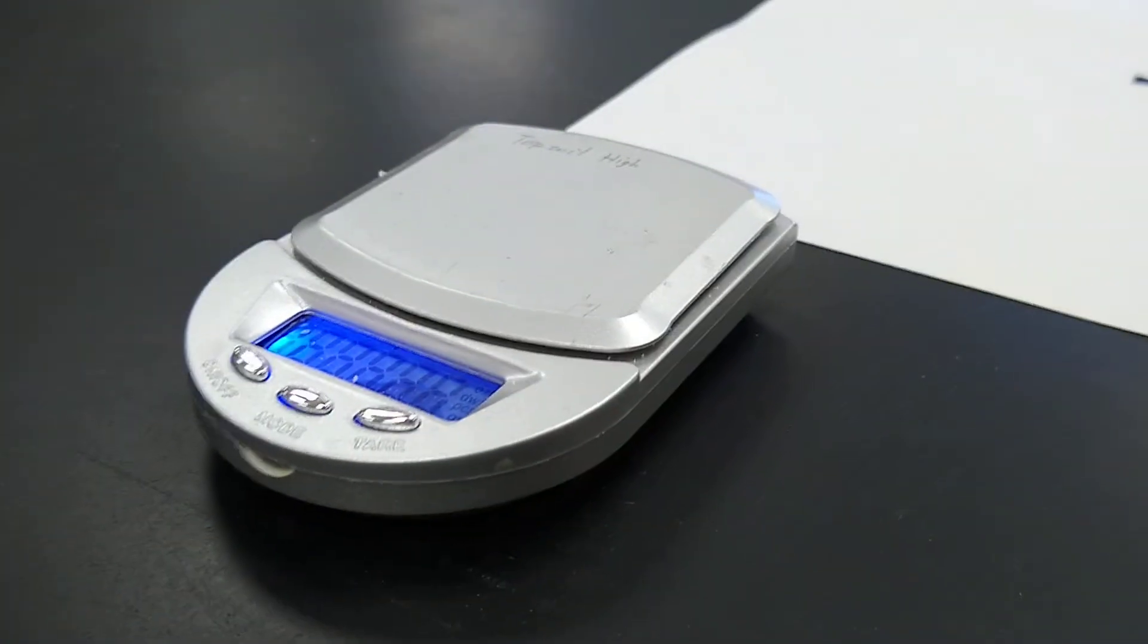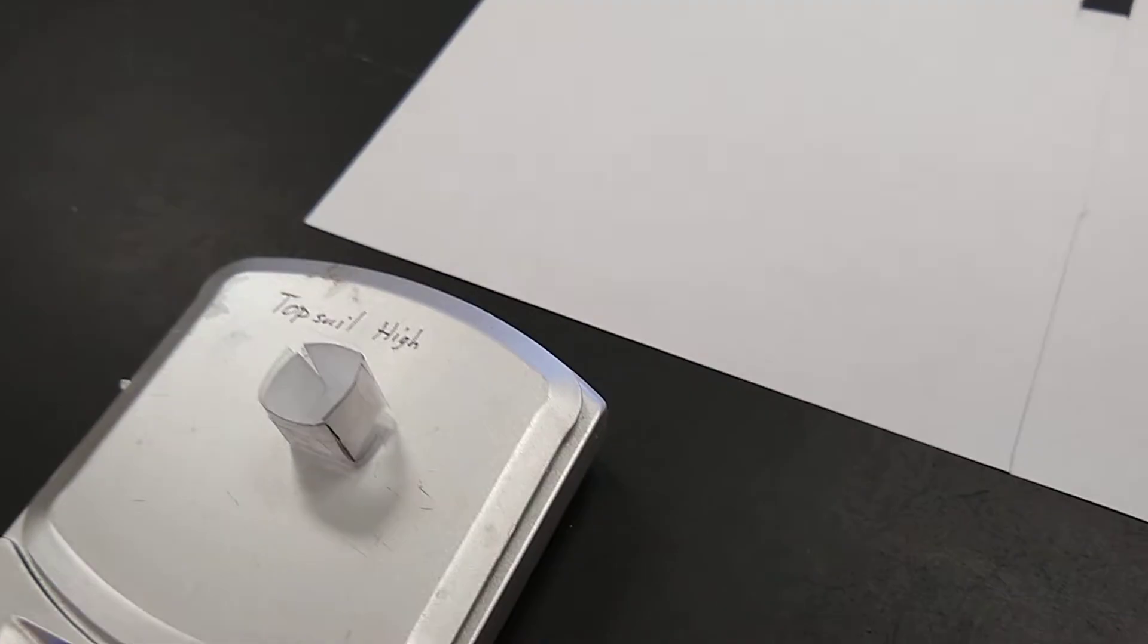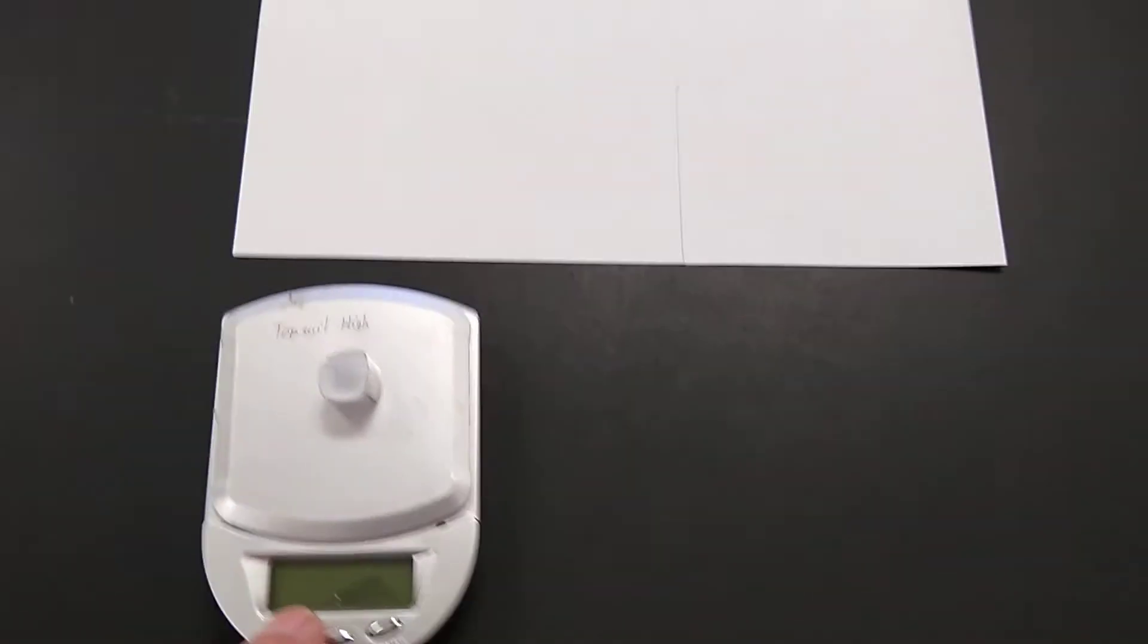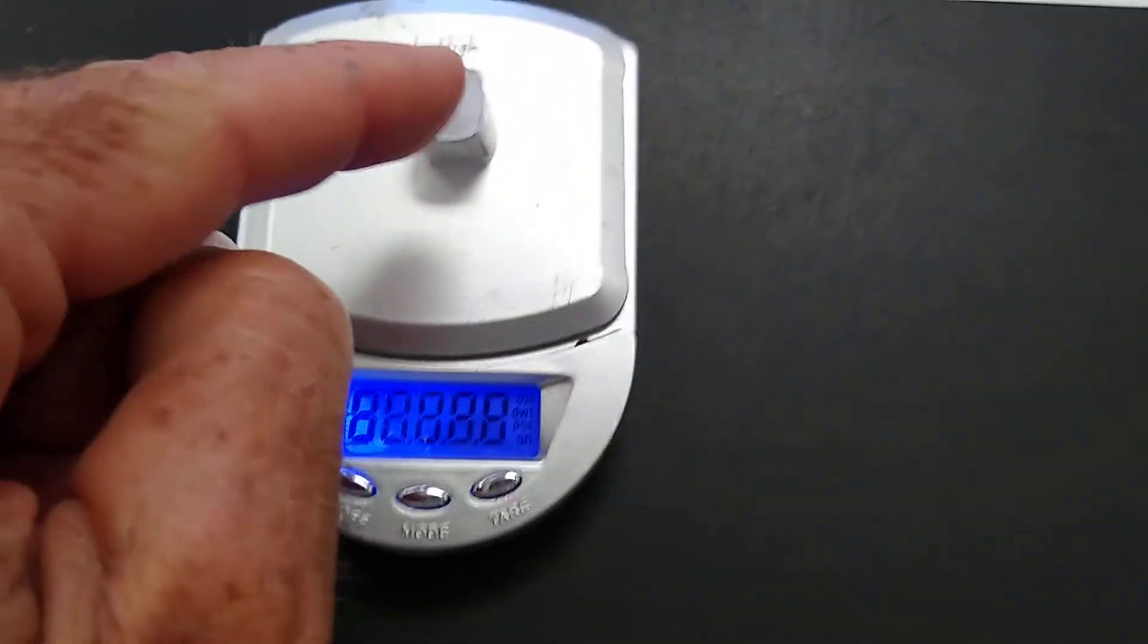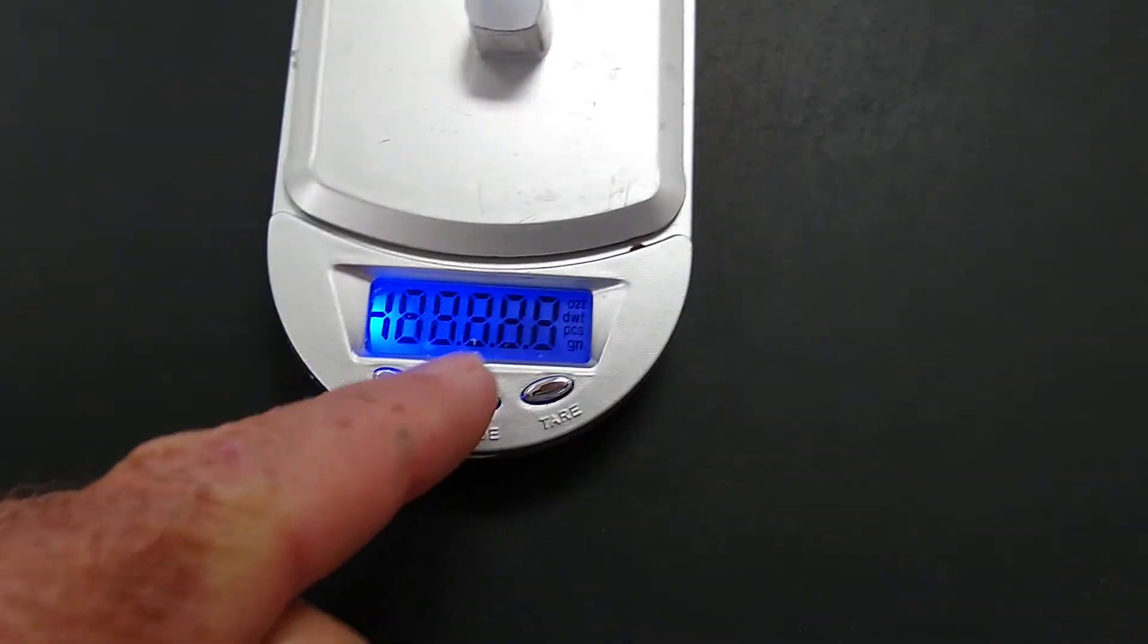And if we took this thing and we put it on the scale, and then we tared the scale out to where the scale said zero, then if we fill this up with water, the scale will read one gram. Does that make sense?